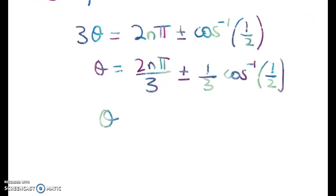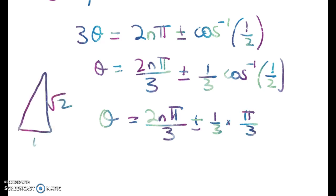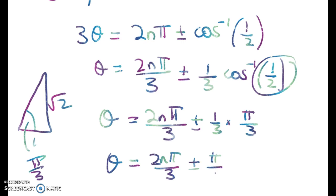So we're now going to pick off the values that we're going to get to give me 3 roots. So theta is 2n pi on 3 plus or minus 1 third times pi on 3. And that's because this is coming from that special triangle. So theta is equal to 2n pi on 3 plus or minus pi on 9.